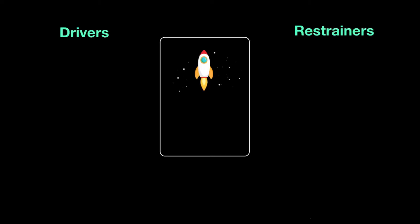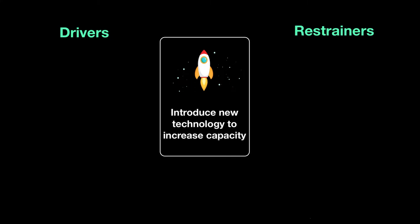Now let's try to construct a force field analysis and see how a business would implement this technique. This represents our strategy. Let's say a business has come up with a strategy of introducing new technology to increase capacity — they want to be able to produce more so that they can sell more. They feel one of the ways to do that is to introduce new technology to increase capacity.